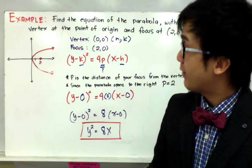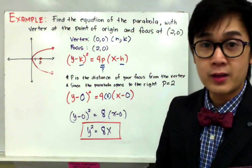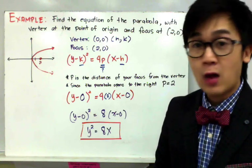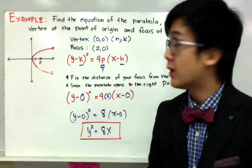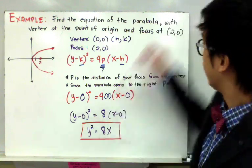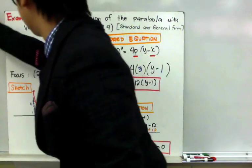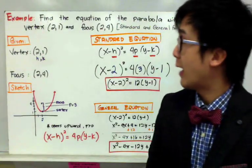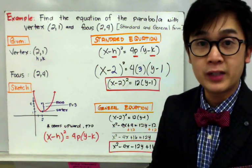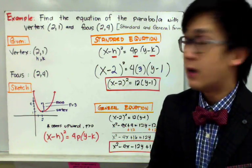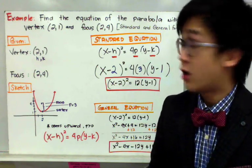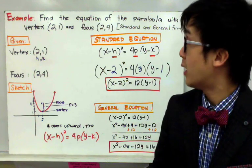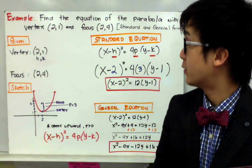Now, what if our vertex is no longer at the point of origin? How are we going to write the standard equation of that particular parabola? In this next example, the parabola no longer has its vertex at the origin. We need to find the equation of the parabola with vertex at (2, 1) and focus at (2, 4).